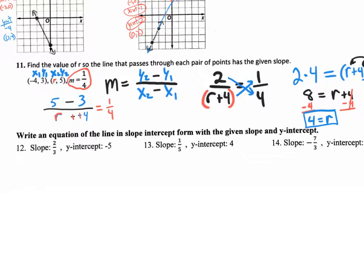You can test it by saying: if r is 4, let's take that 4 and put it where the r is. So that would be 4 plus 4, that's 8, and then 5 take away 3, that's 2. So 2 over 8 reduces down to 1/4. You've double checked it. That's the work to do on number 11.